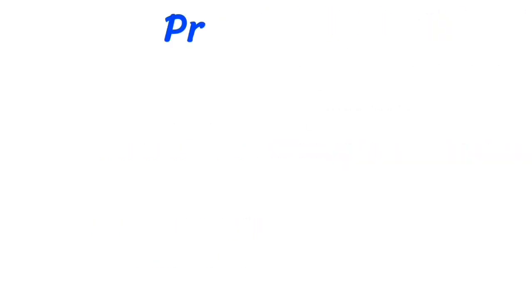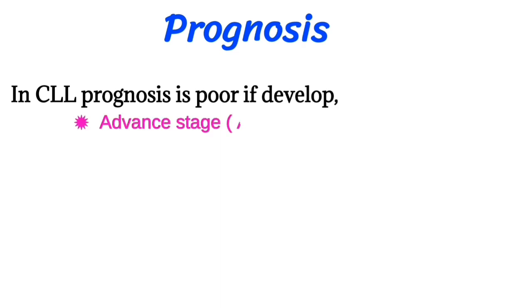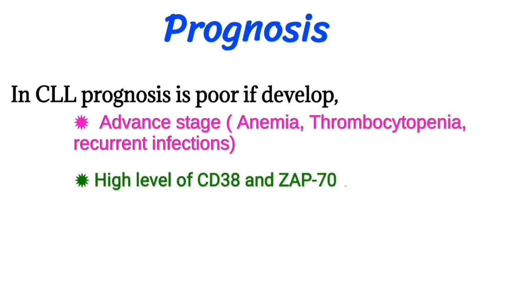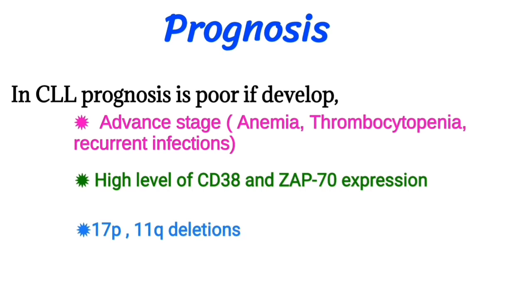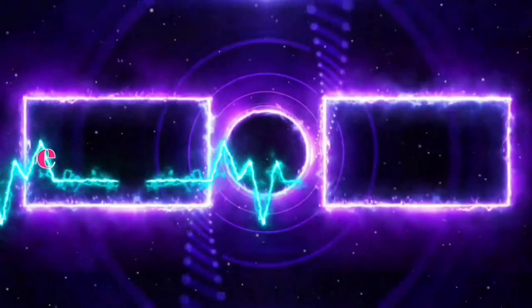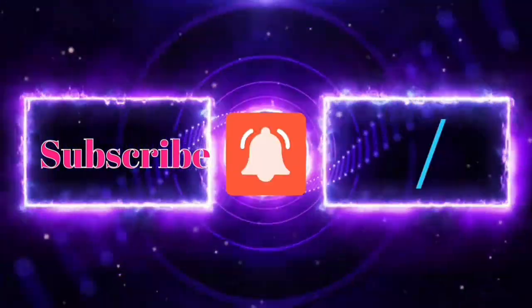Prognosis of CLL is poor if there are advanced stages, which include anemia, thrombocytopenia, and recurrent infection, as well as high levels of CD38 and ZAP-70 expression, and 17p and 11q deletion. Thanks for watching. If you like my videos, please subscribe to my channel and press the bell icon.